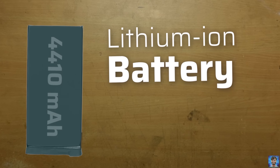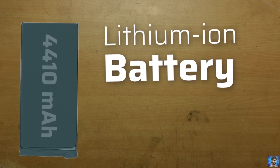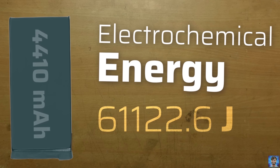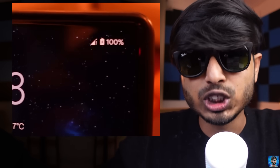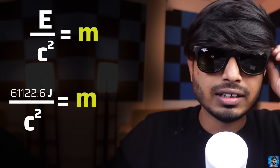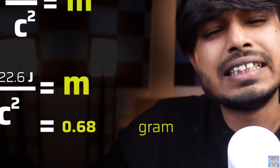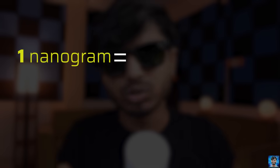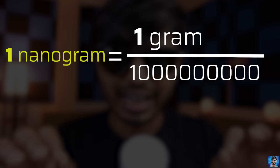Take my phone — it has a 4,410 mAh lithium-ion battery, which stores up to 1,212.06 joules of energy. In other words, when fully charged, the phone is 0.68 nanograms heavier. To put that into perspective, 1 nanogram is one billionth of a gram. That's really small, but it is there.